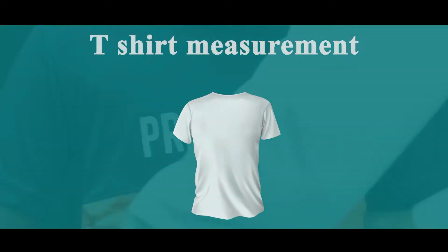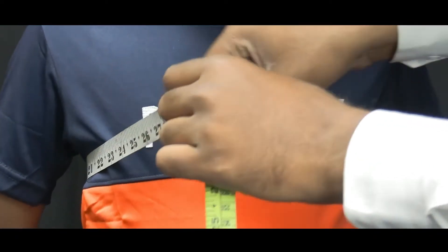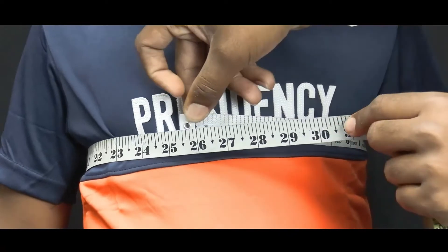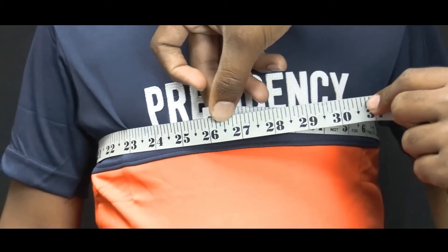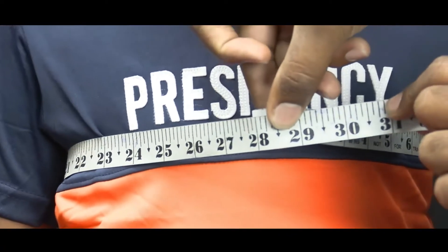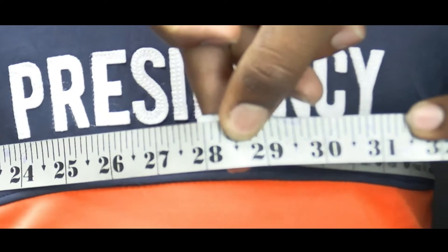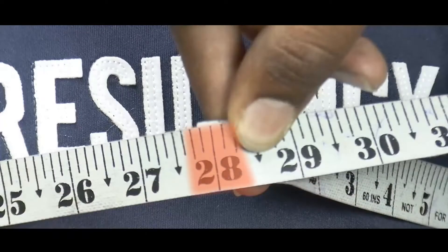In kindergarten t-shirt, first chest measurement. The round chest is 26 inches. In 26, add 2 inches loose, so 28 is the t-shirt size.